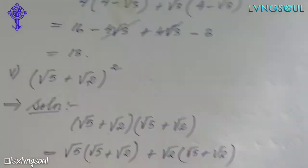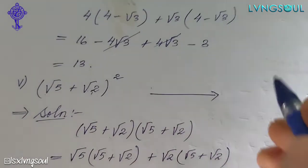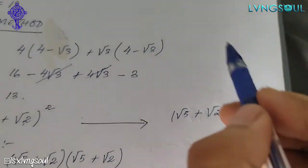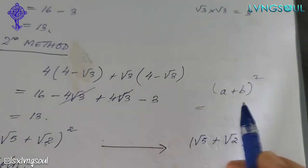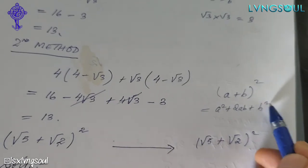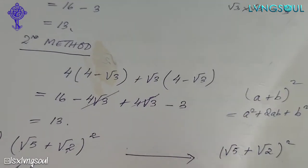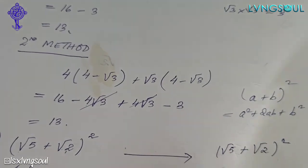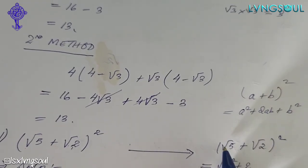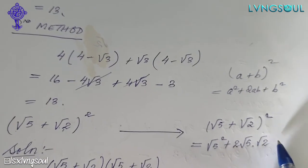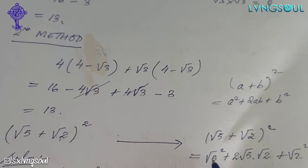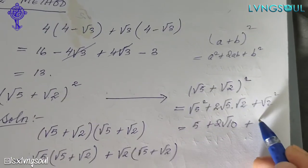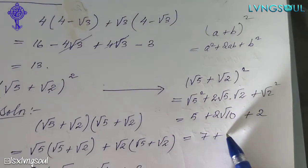This is a method for algebra formula. Second method: root 5 plus root 2 holding square. This formula can apply the a plus b holding square formula: a squared plus 2ab plus b squared. Root 5 plus root 2 holding square — a squared is root 5 squared, plus 2ab is 2 times root 5 into root 2, plus b squared is root 2 squared. Root 5 squared is 5, plus 2 root 10, plus root 2 squared is 2. So 5 plus 2 is 7, plus 2 root 10.